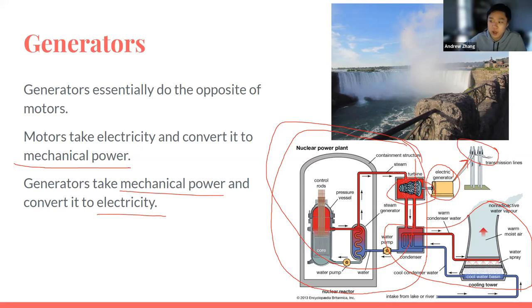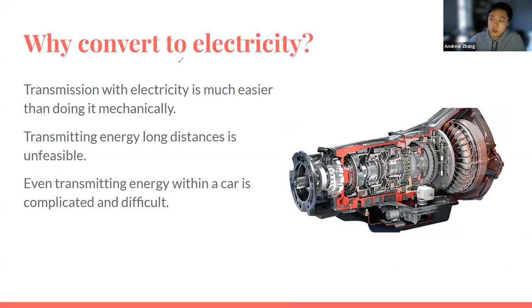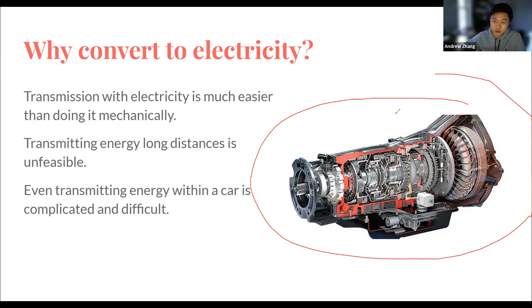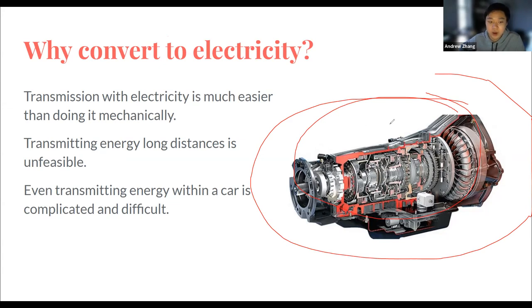This might not be obvious — why use electricity at all? Well, power lines are pretty convenient and useful. If you wanted to transmit energy mechanically, that would mean using gears, and just look at a car transmission — that's already pretty complicated for a small scale. Transmitting mechanical energy over very long distances would be basically impossible. That's why we use electricity — it can be transferred long distances and converted into whatever kind of energy we need.